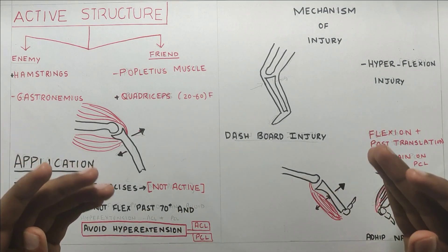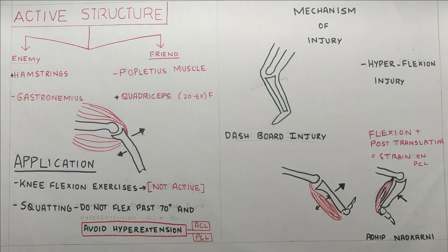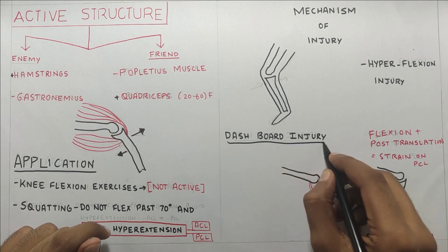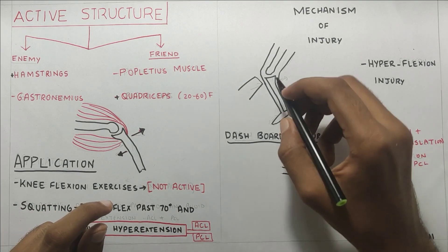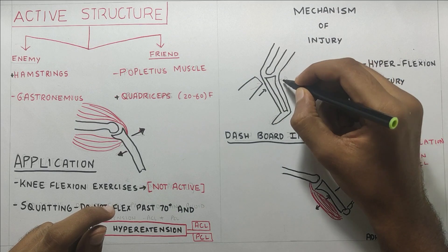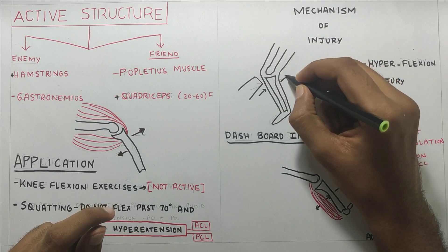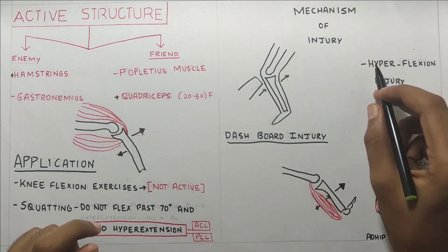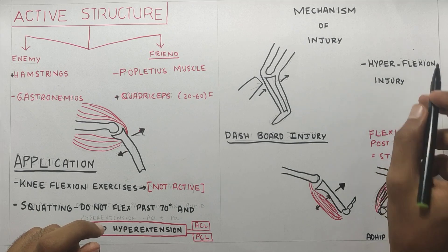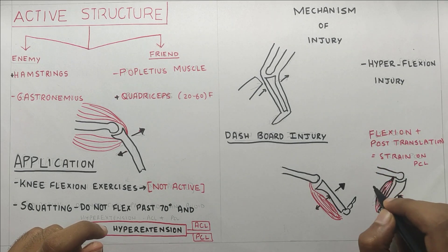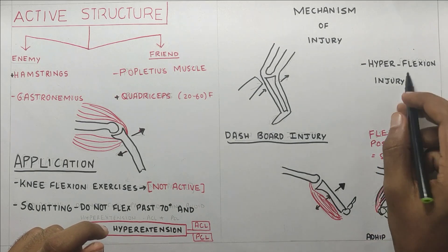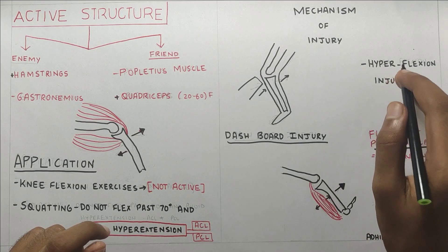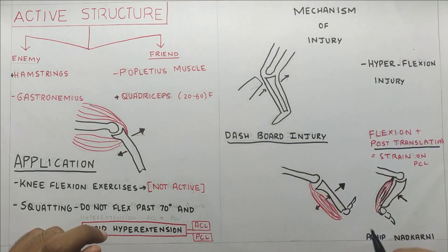PCL is most often injured in a dashboard injury where there is a blow on the tibia and it moves posteriorly. Another type of injury is the hyperflexion injury where the knee goes into hyperflexion and with the hyperflexion there is posterior translation — that's how the PCL gets injured.